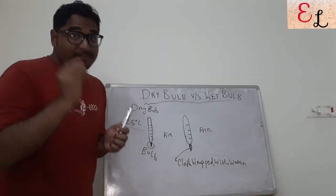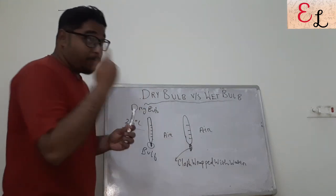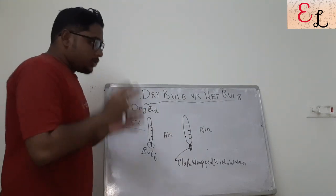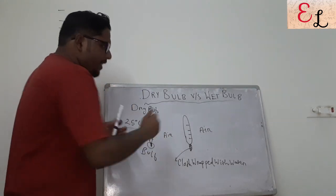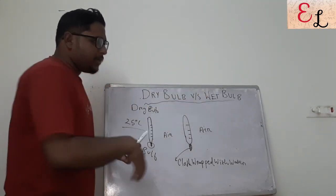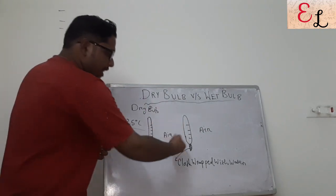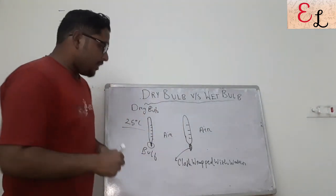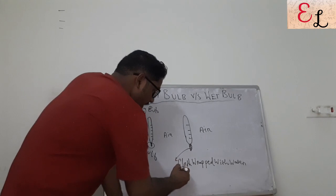The bulb is covered with a layer of water surrounding it. So the concept is: why water, and why is the wet bulb temperature different from the dry bulb temperature? What will happen if we wrap a cloth with water around the bulb?